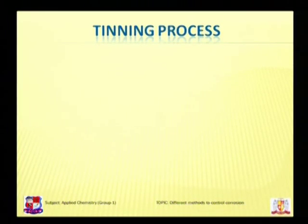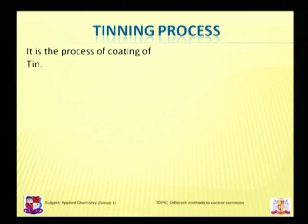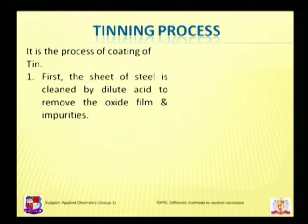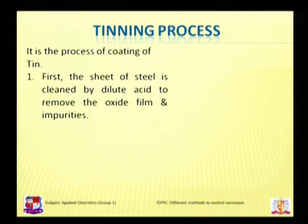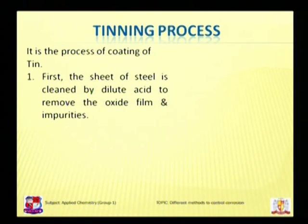The next process is tinning. Tinning is a process of coating with tin. The sheet of steel is first cleaned using dilute acid to remove the oxide film and other impurities.